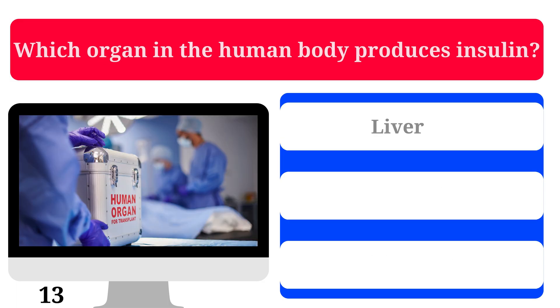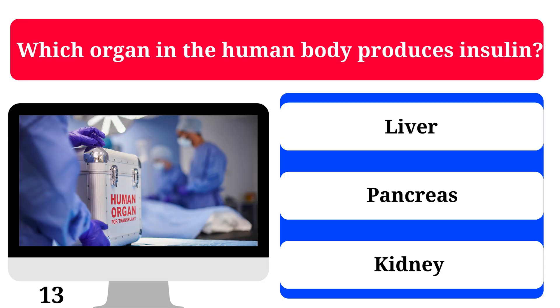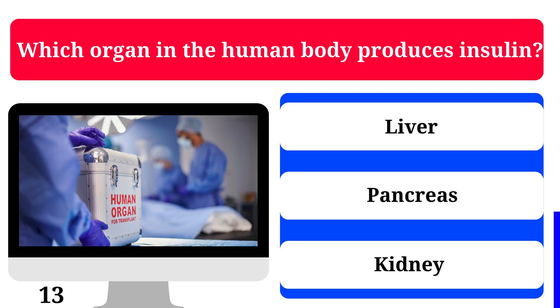Which organ in the human body produces insulin? Liver, pancreas, or kidney? The correct answer is pancreas.